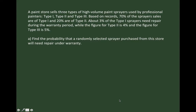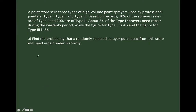Let's go back to the problem. I want to do this problem using a tree diagram. The first thing I need to do is draw a tree. The first part of the tree is going to have three branches because there are three types of sprayers: Type 1, Type 2, and Type 3. The chance that the randomly selected sprayer is Type 1 would be 70% or 0.7. The chance that it's Type 2 would be 20% or 0.2. And the chance that it's Type 3 would be 10% or 0.1, because the sum of all these probabilities must equal 1 — it's either a 1, a 2, or a 3. So 0.7 plus 0.2 plus 0.1 equals 1.